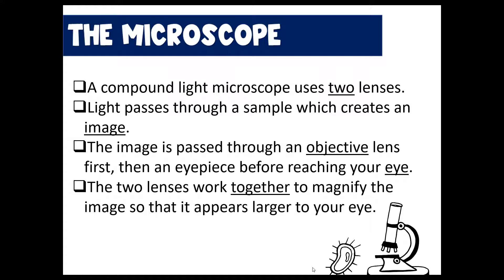The compound light microscope is what we use in the classroom, and it's called a compound light microscope because it uses two lenses. The way it works is light passes through a sample, which we call a specimen, and it creates an image. This image is magnified through the light that passes through the objective lens first, and then it moves through what's called an eyepiece and it reaches your eye as a magnified image.